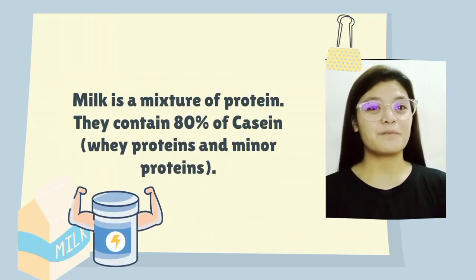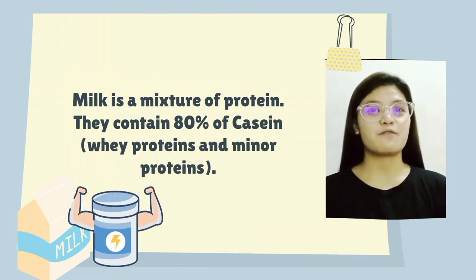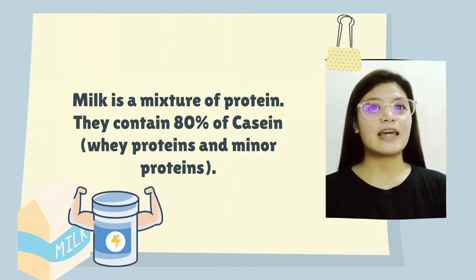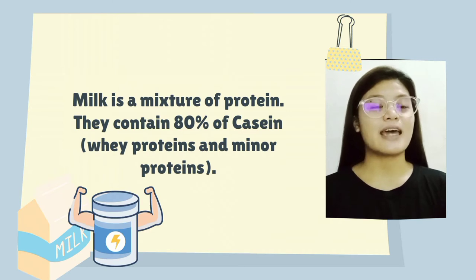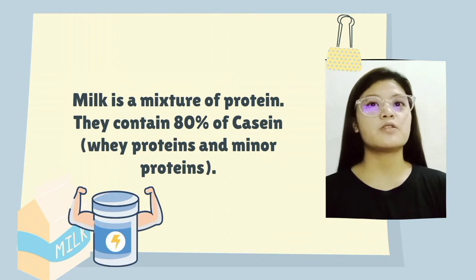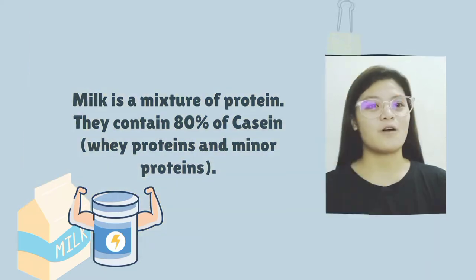Hi! In this experiment, we will extract casein from milk. Milk is a mixture of many types of protein, most of them present in very small amounts. They contain 18% of casein, whey protein, and minor proteins. Casein is a heterogeneous mixture of phosphorus-containing protein in milk. It is responsible for the opaque appearance of milk.